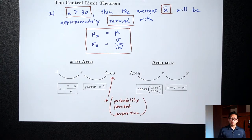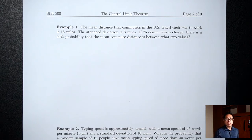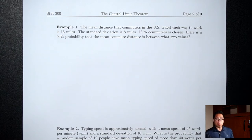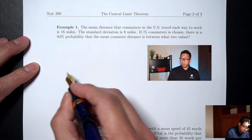Example 1: the mean distance commuters in the US travel each day to work is 16 miles, and the standard deviation is 8 miles. If 75 commuters are chosen, there is a 94% probability that the mean commute distance is between what two values? First, draw a normal distribution picture and put the mean in the middle. We're allowed to use the normal distribution because our sample size is 75, which is more than 30 — the central limit theorem says we can use the normal distribution.